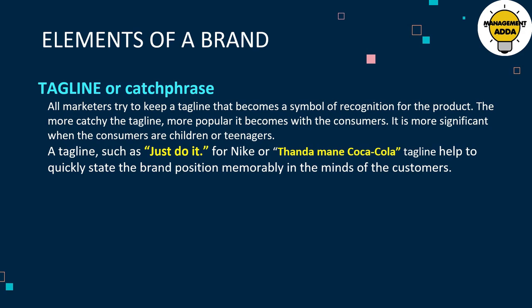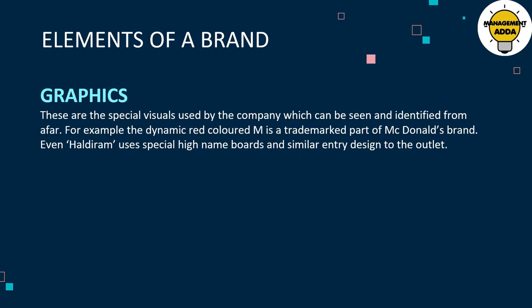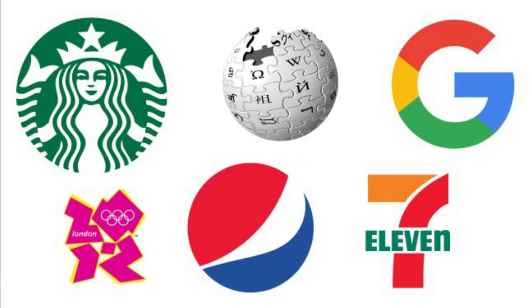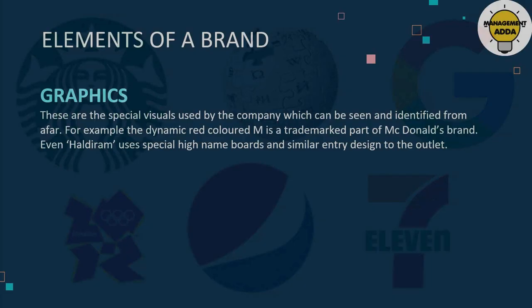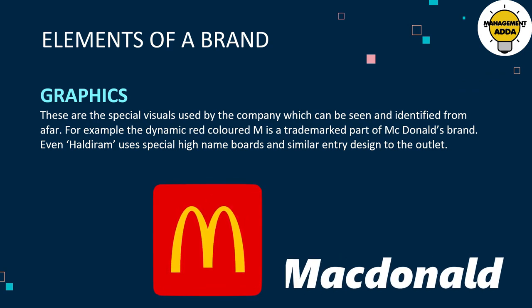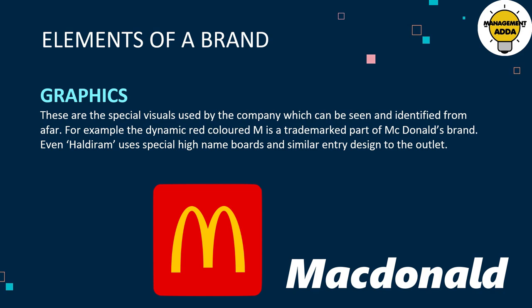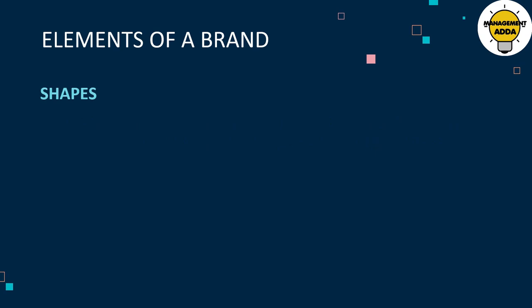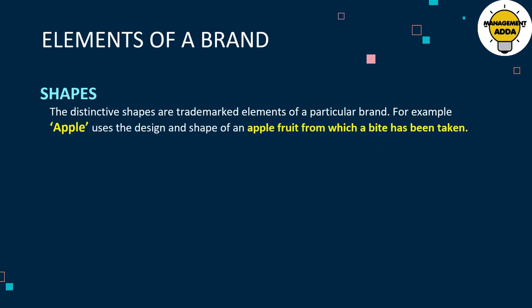A tagline such as 'Just Do It' is for Nike, or 'Thanda Matlab Coca-Cola' is used for the Coca-Cola brand, so that whenever these taglines are used, customers directly recall the brand. The next element is graphics — these are special visuals used by the company which can be seen and identified from far. For example, the dynamic red color capital M is a trademark for McDonald's.